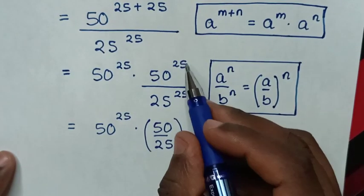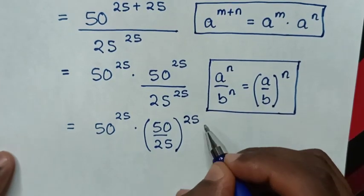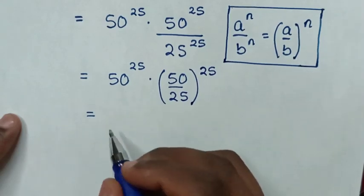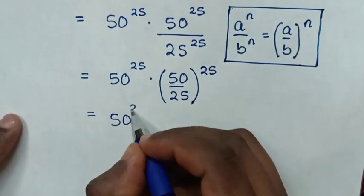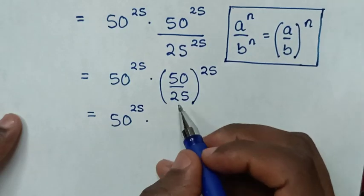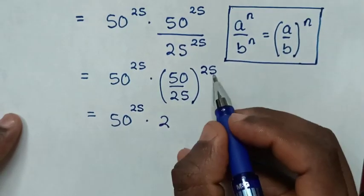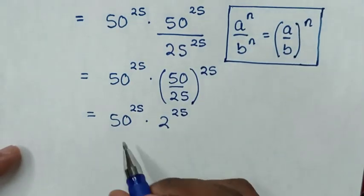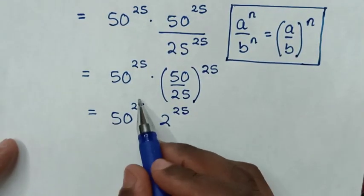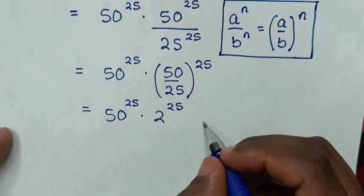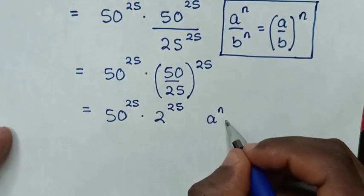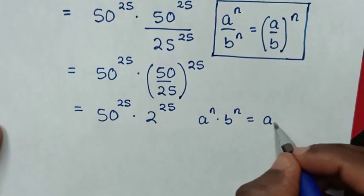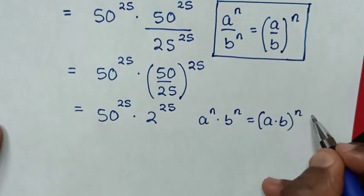Then it will be 50 power of 25, times 50 divided by 25 is 2, power of 25. Then in here we have a multiplication of exponents with the same power of 25, so we apply the exponential rule that a power of n times b power of n is equal to (a times b) to the power of n.